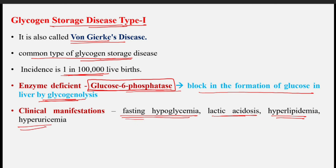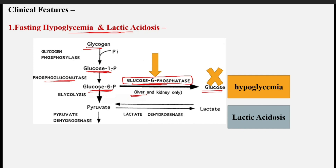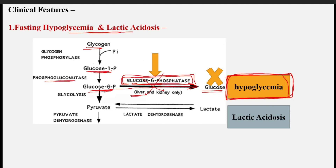For fasting hypoglycemia: glycogen, with the help of the enzyme glycogen phosphorylase, is broken down into glucose-1-phosphate. Glucose-1-phosphate is further converted into glucose-6-phosphate by the enzyme phosphoglucomutase. In the liver, in the presence of glucose-6-phosphatase, glucose-6-phosphate is converted into glucose — because in muscle this enzyme is absent. In these patients, glucose-6-phosphatase is absent, so conversion of glucose-6-phosphate to glucose does not occur, resulting in hypoglycemia.